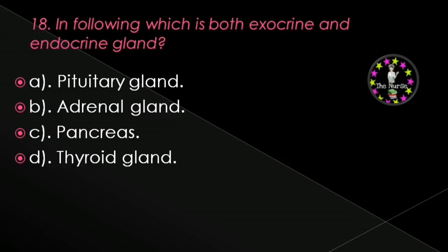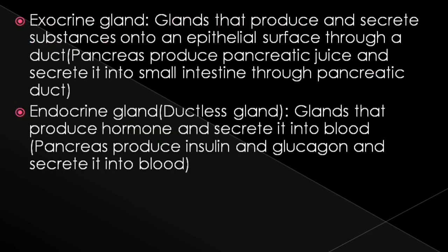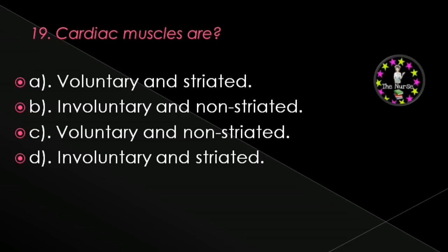Next question: Which is both an exocrine and endocrine gland — pituitary gland, adrenal, pancreas, or thyroid gland? Correct answer is pancreas. Exocrine glands produce and secrete substances through a duct; the pancreas produces pancreatic juice and secretes it into the small intestine through the pancreatic duct. As an endocrine gland, the pancreas produces insulin and glucagon and secretes them into the blood.